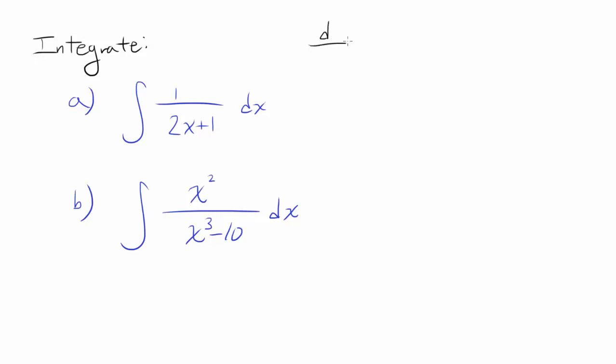And so far in this playlist, in this AP calculus playlist, we have learned that when you differentiate natural log of x, you get 1 over x. Or natural log of absolute value of x, you get 1 over x.